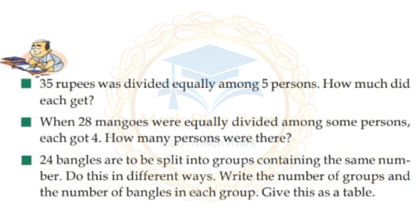When 28 mangos were equally divided among some persons, each got 4. How many persons were there? 28 divided by 4 equals 7 persons.